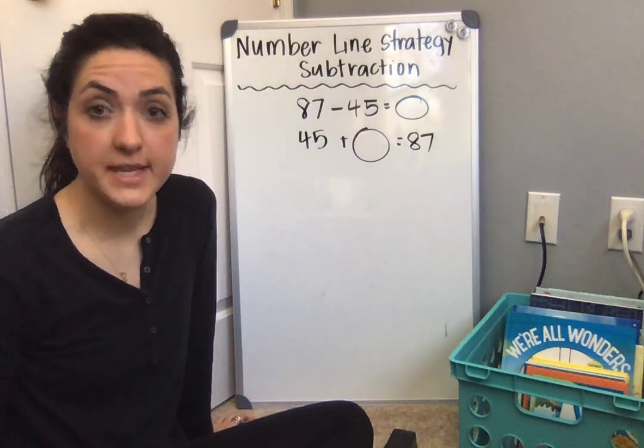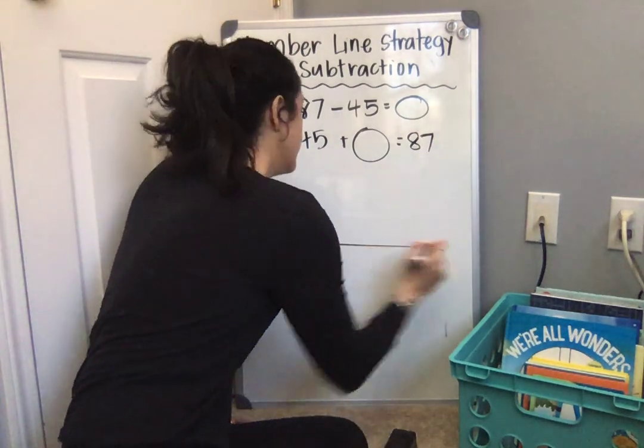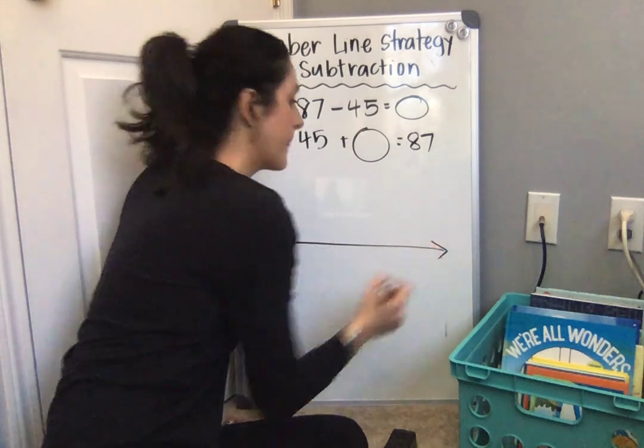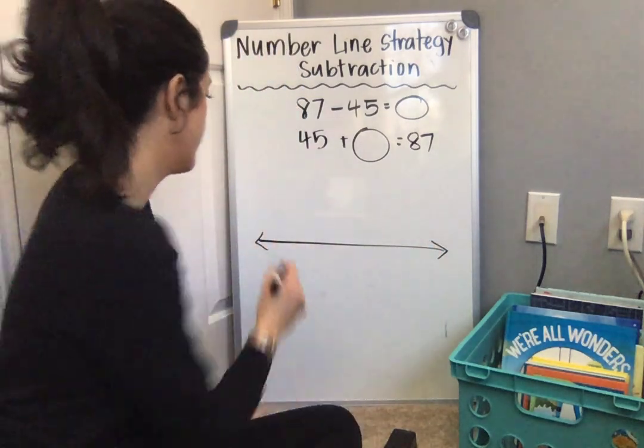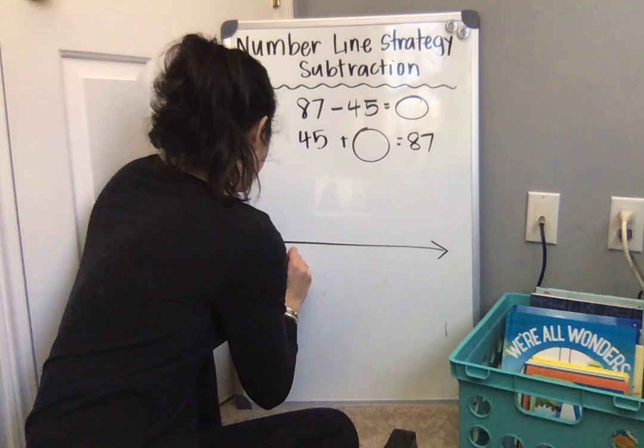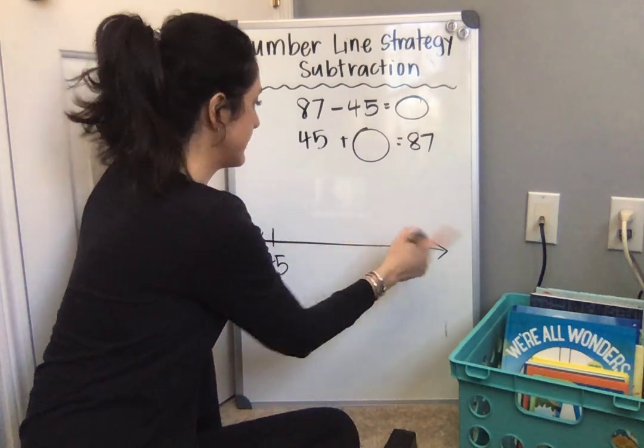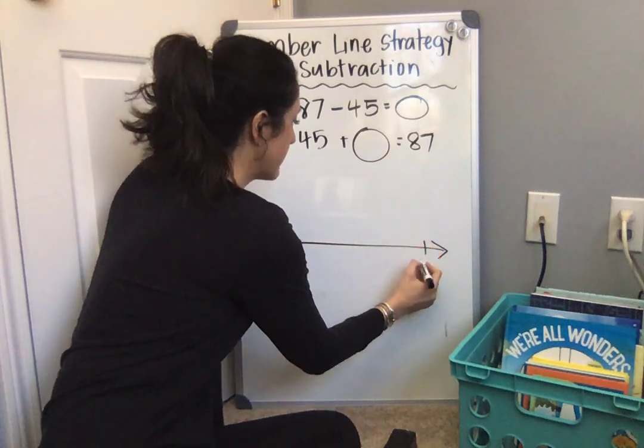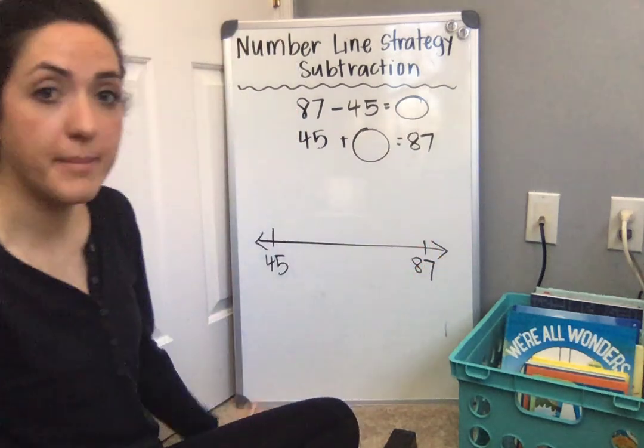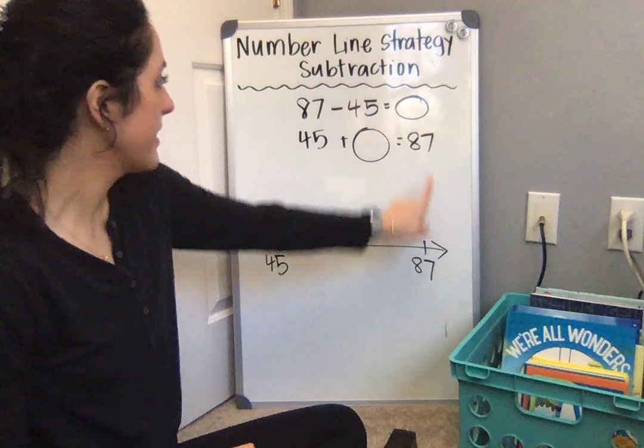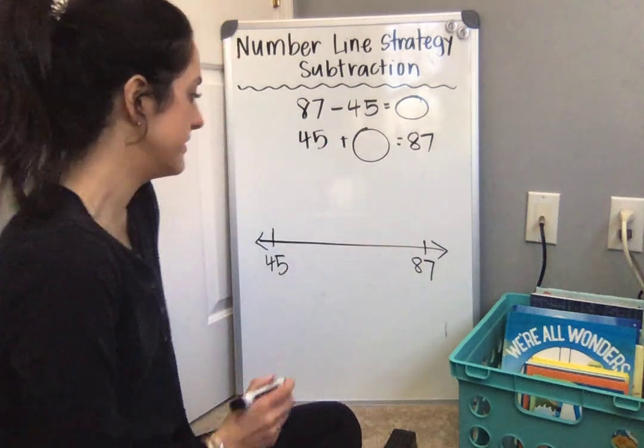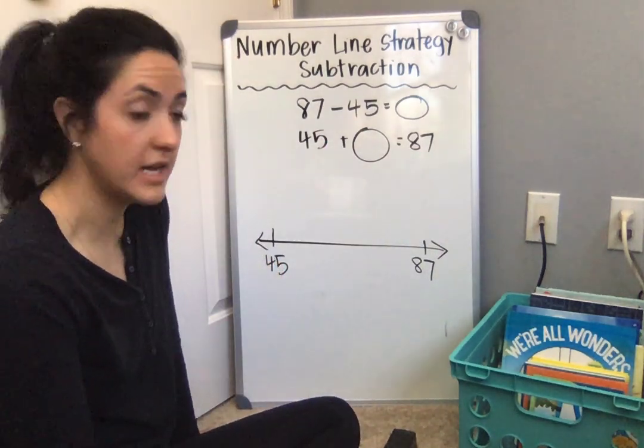Now I can solve with the number line. I'm going to draw it here and set it up like this. My smaller number goes here, 45. My plus something is my jumping that I'm going to do, and then it's going to equal 87. See how that matches? The smaller number, the bigger number, and the plus something in the middle. Okay, now it's time to do some jumps.